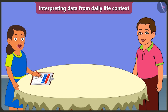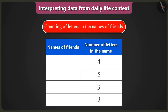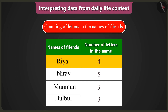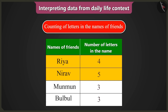And how is that? Look, Bubli, here the first name is Riya, which is made from four letters, and you have written the number four only. And the second name is Nirav, which is made from five letters. Bubli, your table is okay till here.